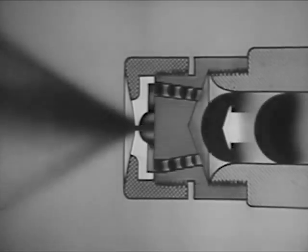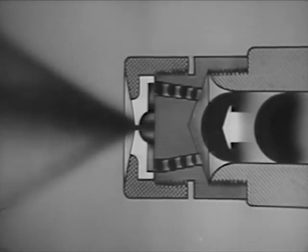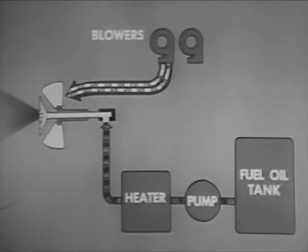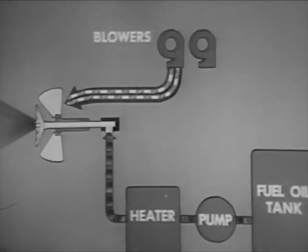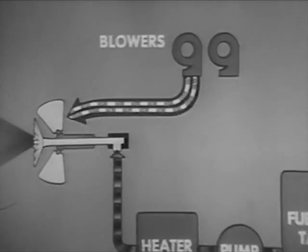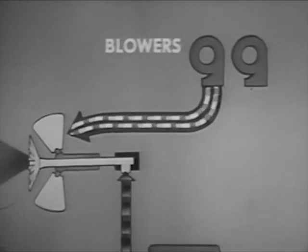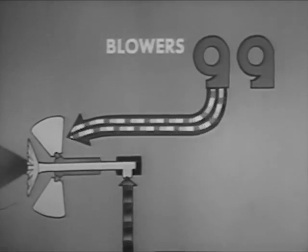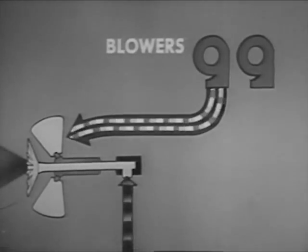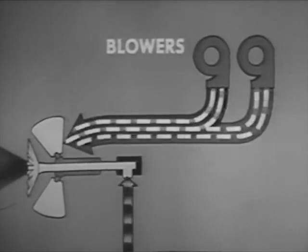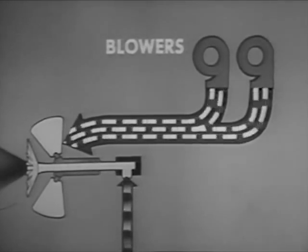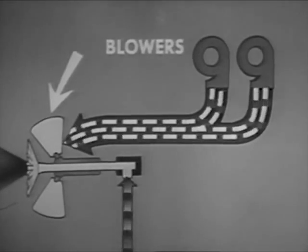Frequent changes are necessary because the operating range of a given sprayer plate is very limited. Controlling the force draft blowers is the principal method of controlling the quantity of air reaching the burner. For example, to increase the air a moderate amount, you increase the speed of the blower in service. Or, if even more air is needed, you cut in another blower. You can make minor adjustments in the air supply with the air doors.